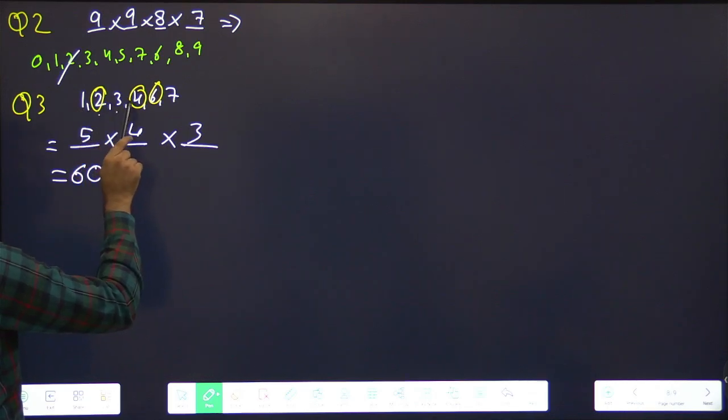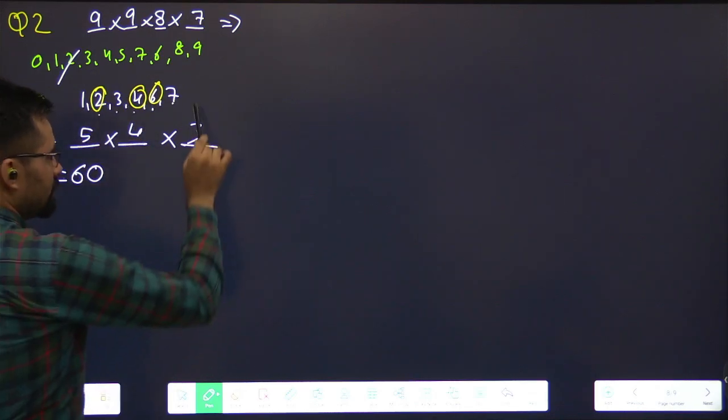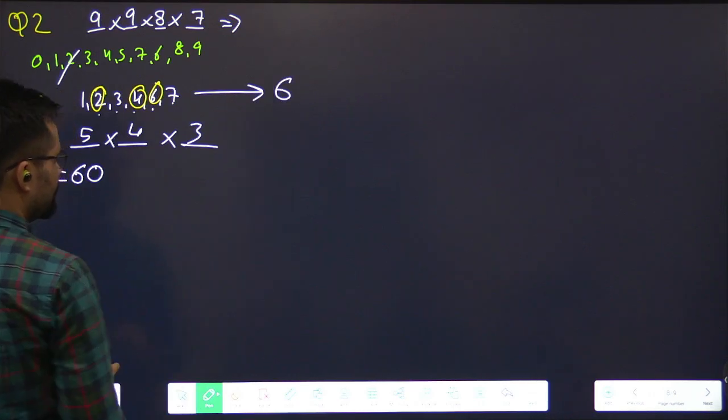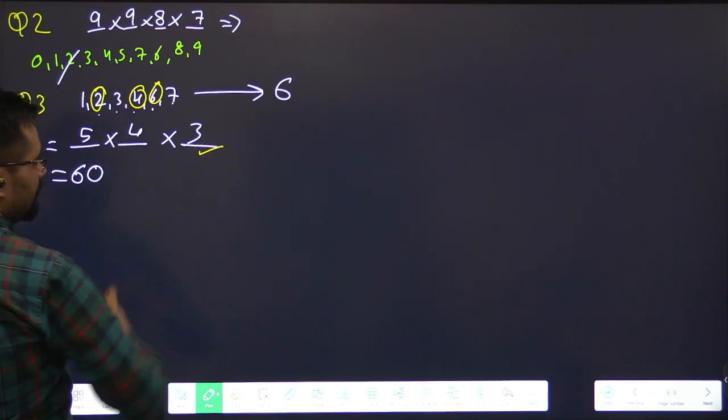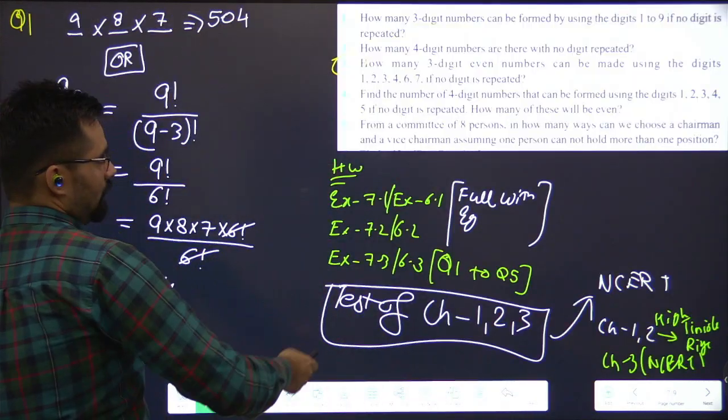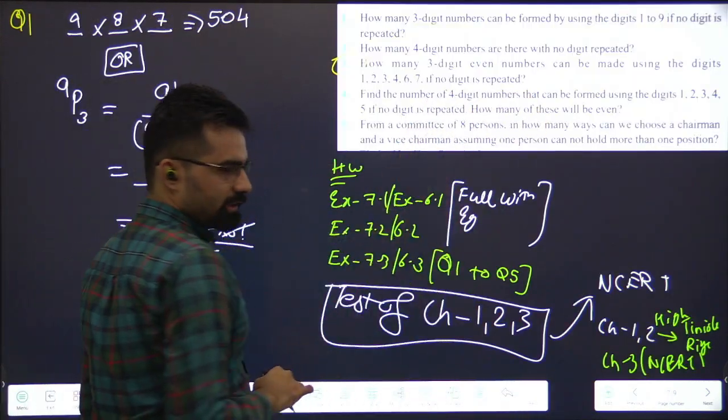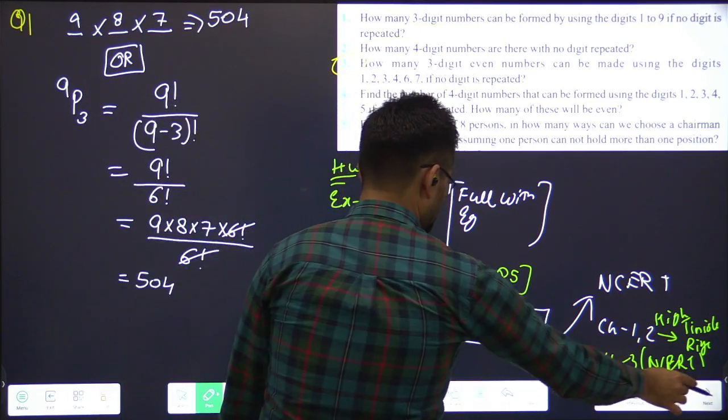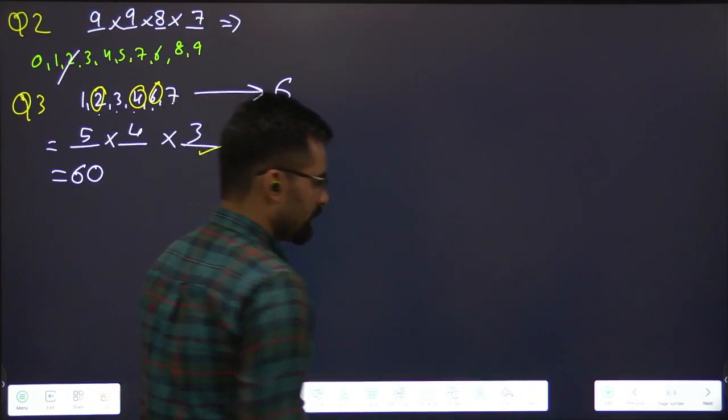One, two, three, four, five, six. Six into five into three. I have one element. One, two, three, four, five, six. Six numbers are there. Six digits are there. Last digit three. Repetition is not allowed, right? Read the question. No digit is repeated. Clear? Let's move on. Okay.